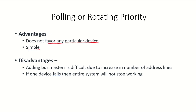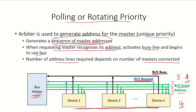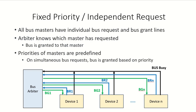The disadvantage of polling is that adding bus masters is difficult because it would increase the number of address lines. However, unlike the daisy chain method — where a failing device prevented the bus grant from being propagated — in the polling scheme, since there are separate bus grant address lines, even if one device fails, the bus grant lines remain active and the system continues working.